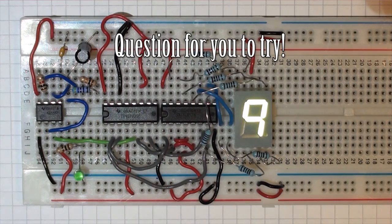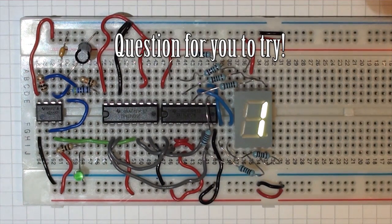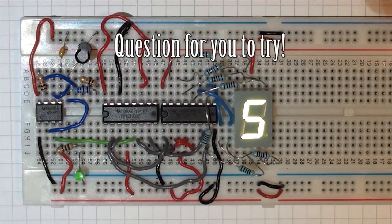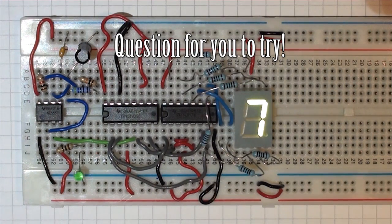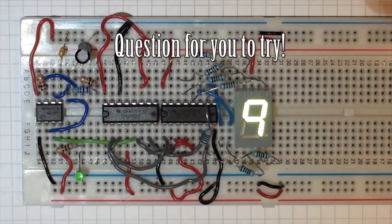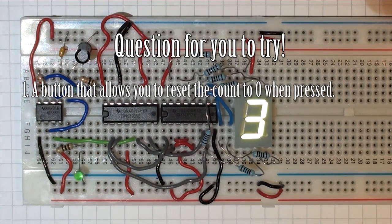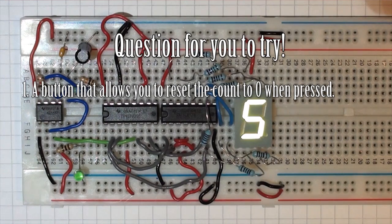Okay, so here's a question for you to try yourself. Go to the data sheet for the BCD up-down counter, and modify this circuit to add the following. One, a button that allows you to reset the counter, reset the value to 0 whenever it's pressed.